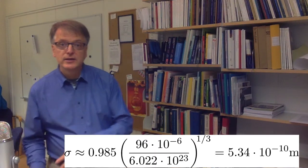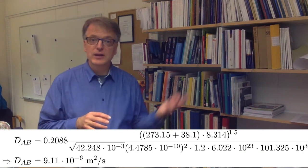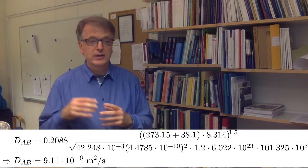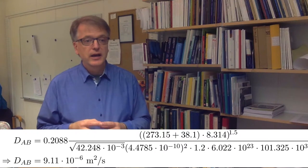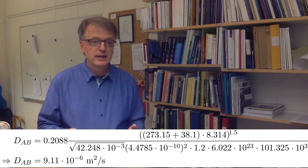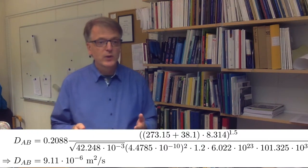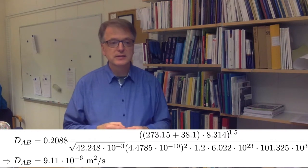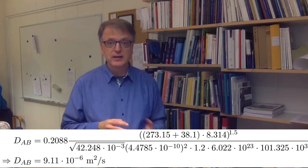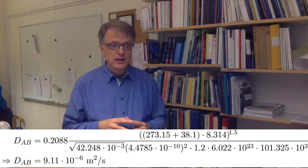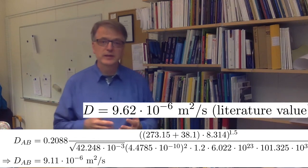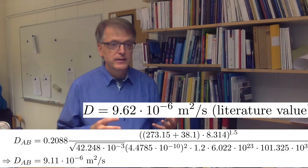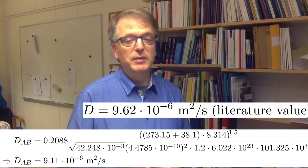We could continue here and put that into the advanced model, the characteristic collision diameter and the characteristic energy. And what we get then is 9.11, 10 to the power minus 6 square meters per second as the diffusivity, which is still close to the literature value of 9.62, 10 to the power minus 6 square meters per second.